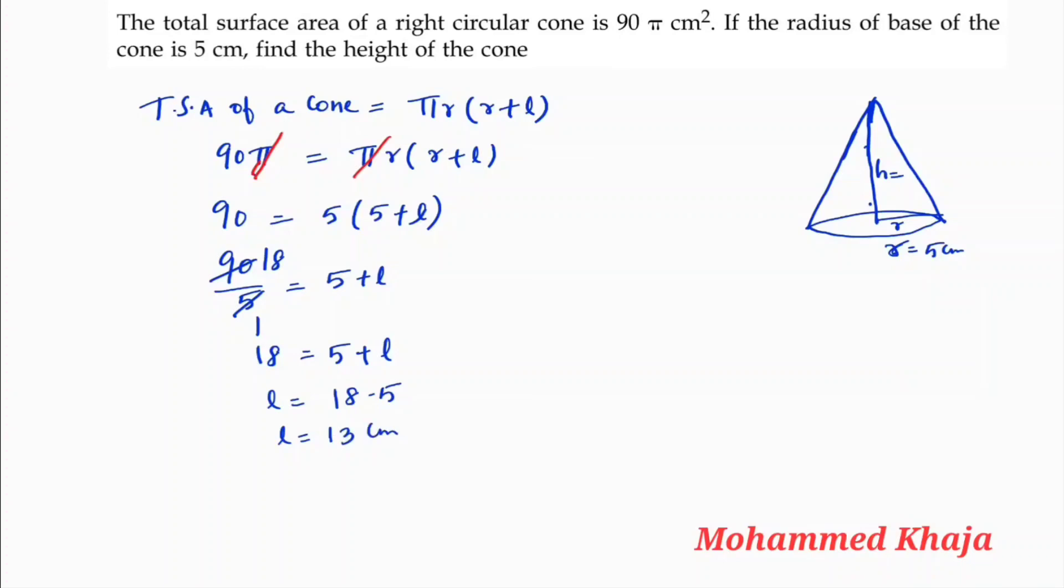But they are asking for height, so we apply the Pythagorean theorem. The relation between l, h, and r is l² = h² + r². The slant height l is 13.